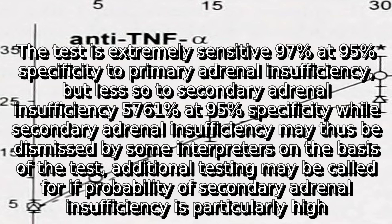The test is extremely sensitive — 97% at 95% specificity — to primary adrenal insufficiency, but less so to secondary adrenal insufficiency, at 57–61% at 95% specificity. While secondary adrenal insufficiency may thus be dismissed by some interpreters on the basis of the test, additional testing may be called for if the probability of secondary adrenal insufficiency is particularly high.